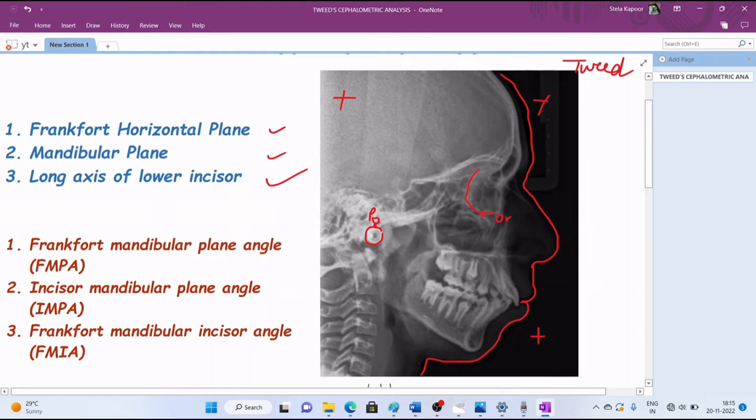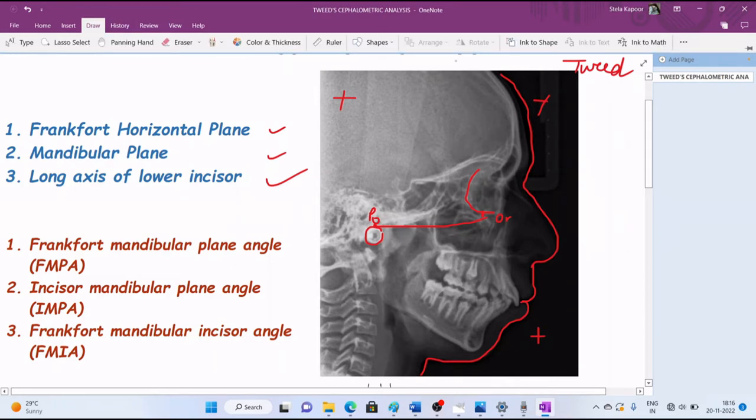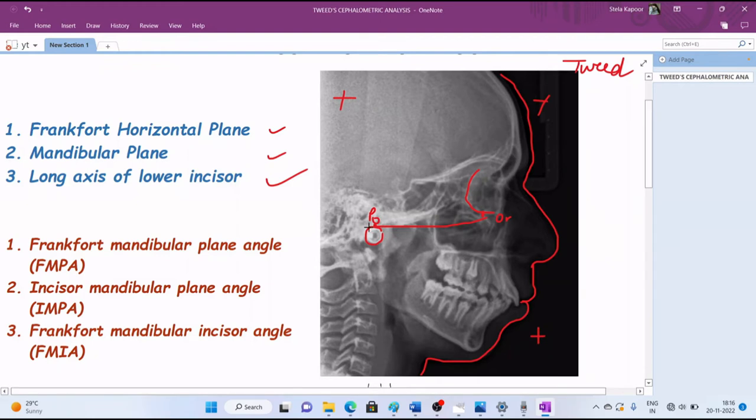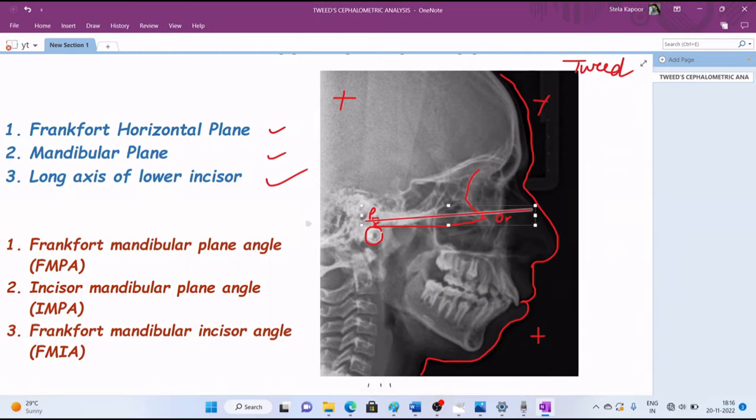As I mentioned previously, we have three planes. First is the Frankfurt horizontal plane. This plane is formed by joining the lines porion and orbitale. This is our FH plane from porion to orbitale.